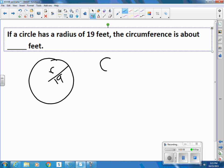Well, the circumference is defined as 2 times the radius times pi. So that turns out to be 2 times 19 times pi.